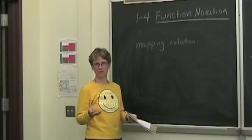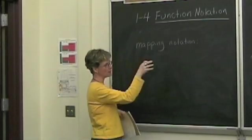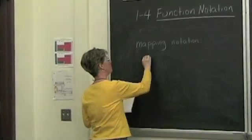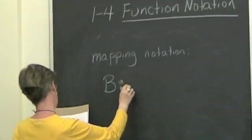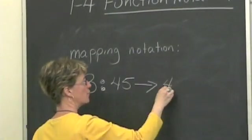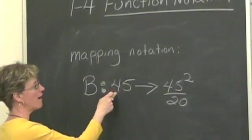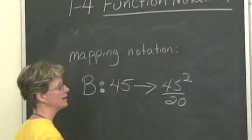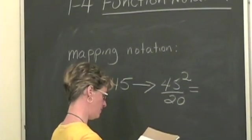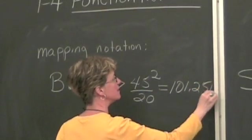Another way of describing functions or notating them is called mapping notation. And it looks like this. If we use the same problem that we just had about the stopping distance and the braking distance, we could say the braking distance B maps 45 miles per hour onto 45 squared over 20. So this is read, B maps 45 onto this. And then this is the resulting expression that needs to be simplified. And of course, we just figured that out a bit ago and that turns out to be 101.25 feet.